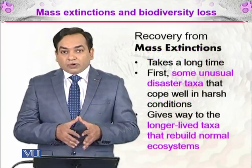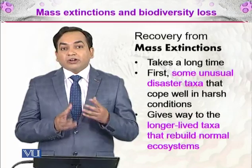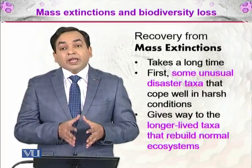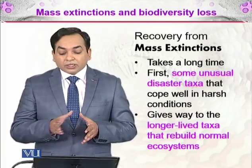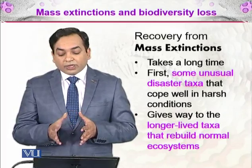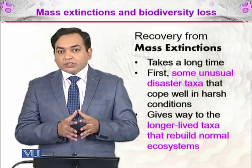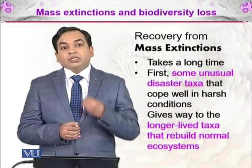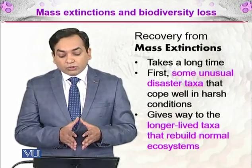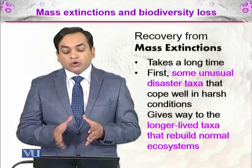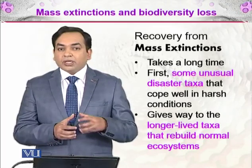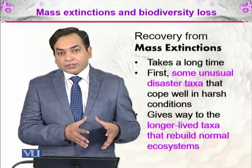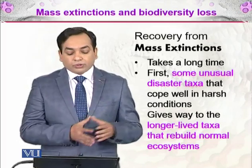How does our ecosystem or biodiversity recover from mass extinction? It takes a long time. First, some opportunistic disaster taxa will cope well in the harsh conditions — taxa that are adaptable to rapid change. Later, these will give way to longer-lived taxa that rebuild normal ecosystems. So there will be groups of living organisms that develop later and eventually change the ecosystem back to normal.